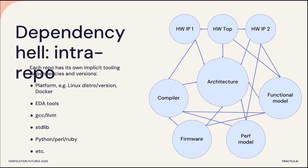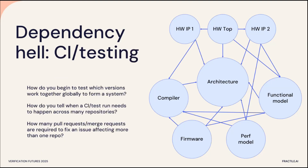Thinking about intra-repo dependency hell: each repository has its own implicit requirements on the outside world. Most repositories will assume some flavor of Linux, maybe Red Hat. They'll assume certain EDA tools are installed at certain paths, certain STD libs installed, or certain versions of Python. In a lot of places that's not made explicit. And then the worst part: how do you test all the dependencies between all the repositories? How do you decide when something can function together as one big system that you can safely tape out? And how many pull requests do you need to fix one problem which affects many repositories?